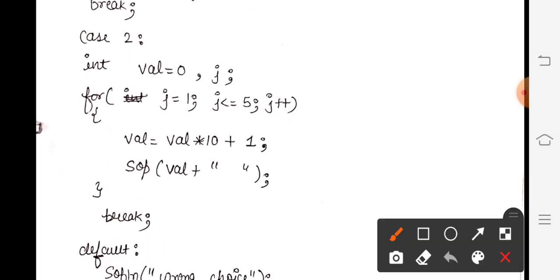Then starting with case 2 here. Case 2 mein, because there were 5 terms, so j ko start kiya hai. One more variable taken: j. j ko start kiya 1 se, up to 5 tak, because only 5 terms were there. Then j++. Theek hai.